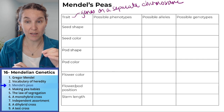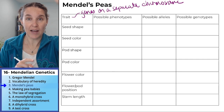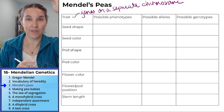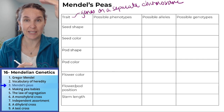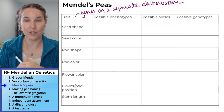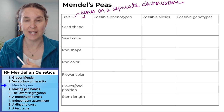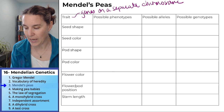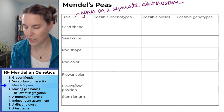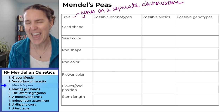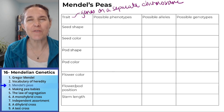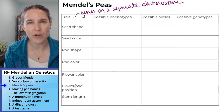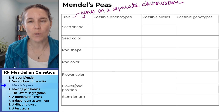The traits that Mendel looked at were seed shape and color, pea pod shape and color, flower color, flower position, and the height of the plant itself — the short ones and the tall ones. Let's look at the possible phenotypes for each one of these, and I'm going to fill in this chart for you.